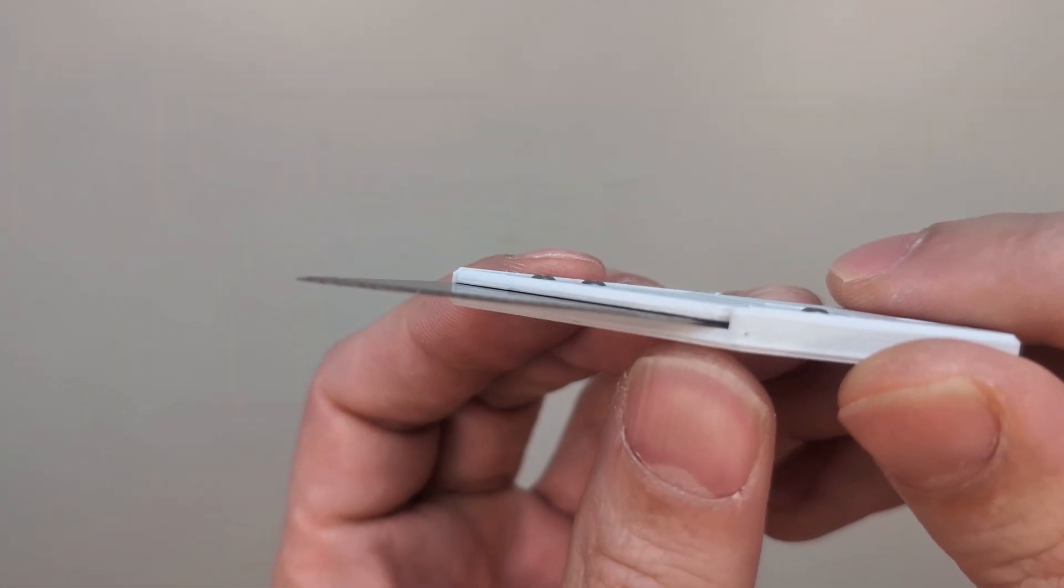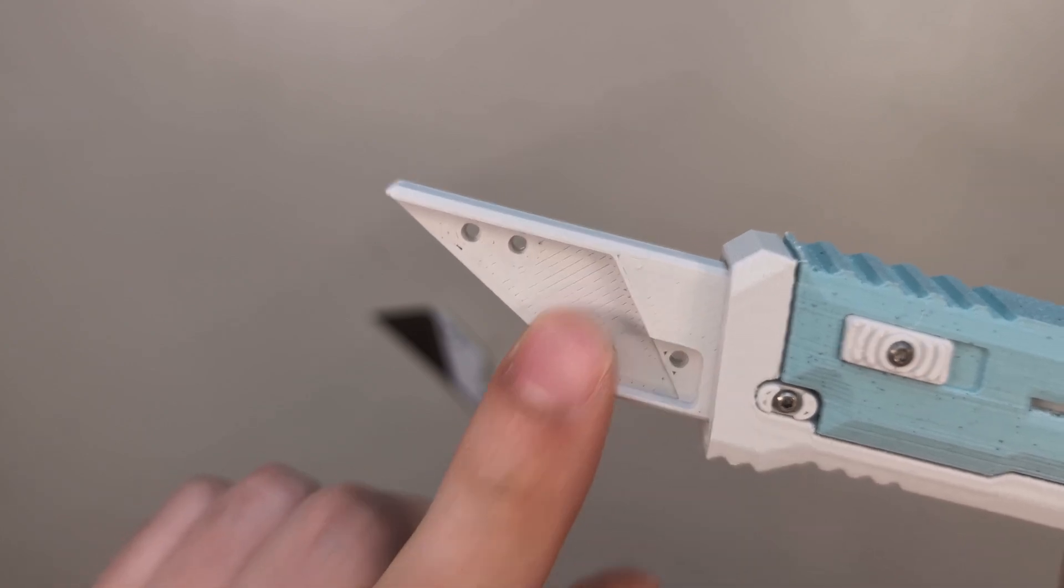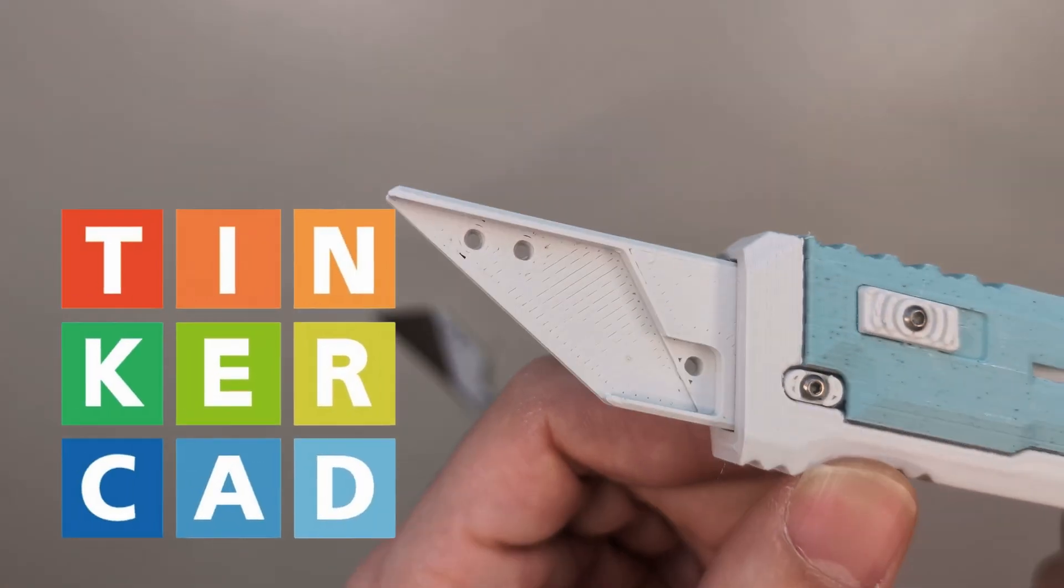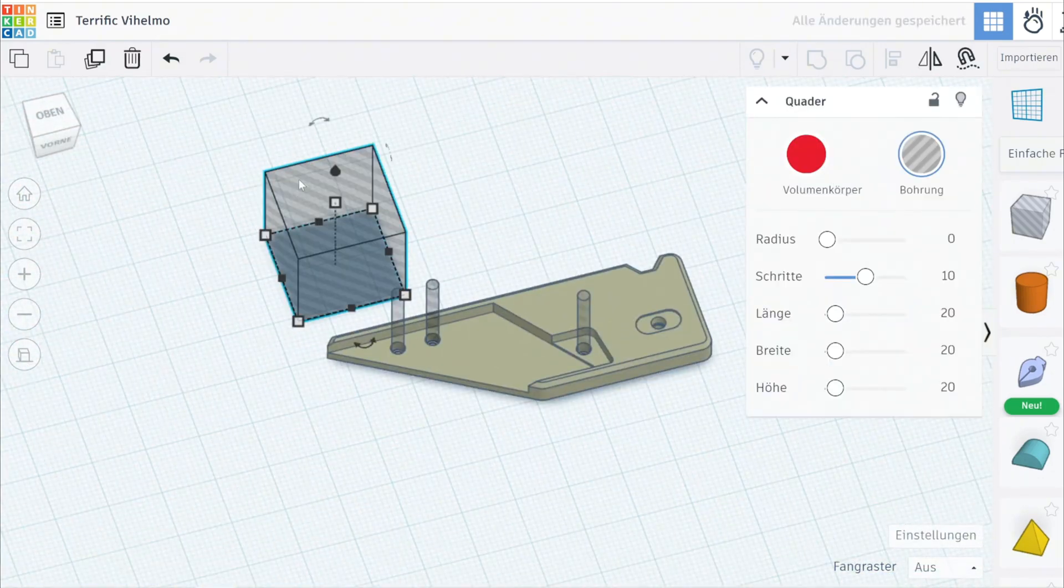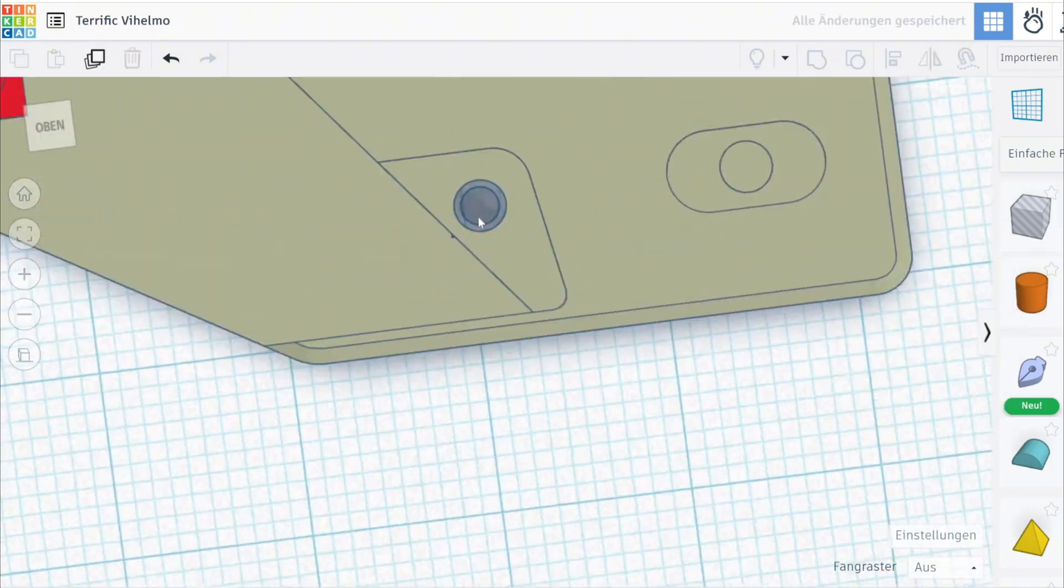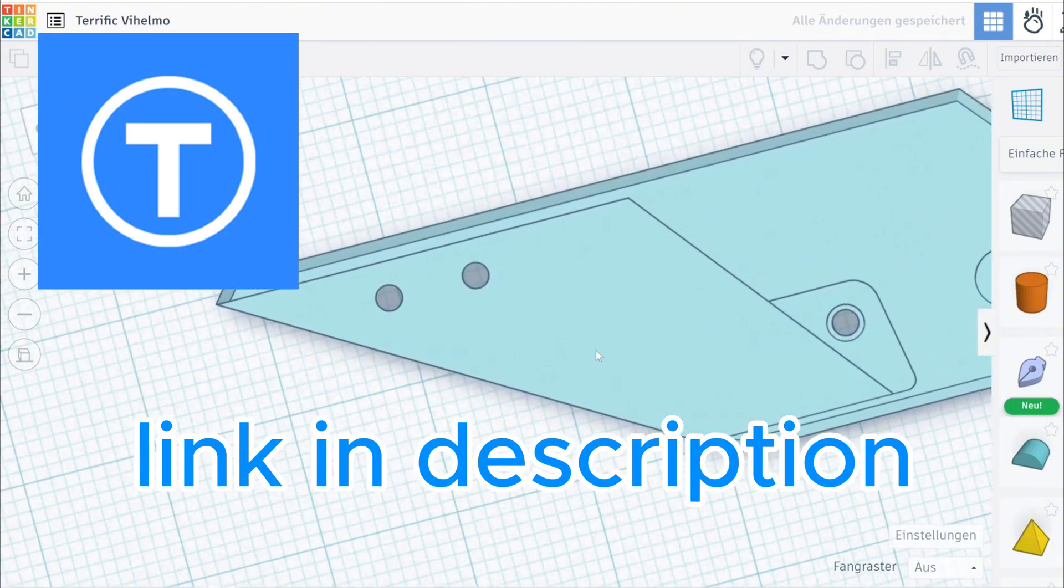Later on I realized that the screw holes of the blade holder are too big. So I had to redo this part here. For that I jumped into Tinkercad, where I first centered the new smaller holes, then filled the old ones and finally extruded the new smaller holes. And I then have uploaded this modified part to Thingiverse, so you don't have to do it yourself.